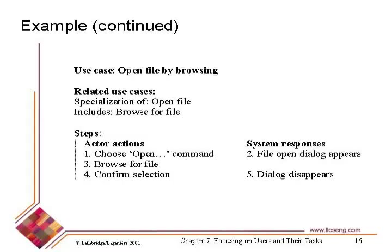'Open file by browsing' is another specialization of 'open file.' Again, we have 'choose open command,' file open dialogue appears, and this time 'browse for file' — which is just an inclusion use case. Then 'confirm selection' — not saying how, whether clicking OK or hitting return — and dialogue disappears. The main difference is 'browse for file.' Then we have an exception use case: 'attempt to open a file that does not exist.'